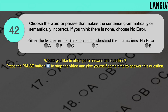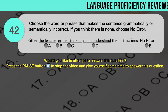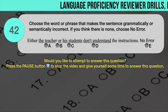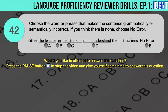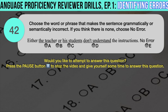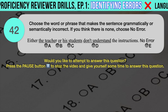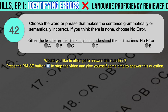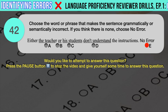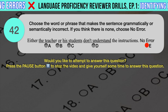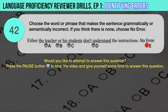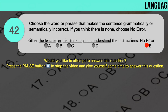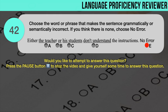Drill question number 42. 'Either the teacher or his students don't understand the instructions.' The correct answer is E — the sentence does not contain an erroneous word or phrase. The subject-verb agreement rule in an either-or statement is that the verb should conform to the subject nearest to it. Although 'the teacher' is singular, the verb 'don't understand' correctly conforms with the second subject 'students,' which is nearer to it.